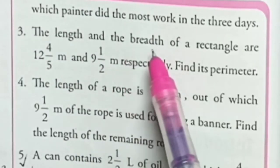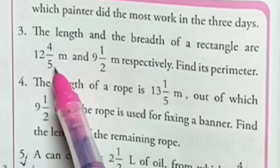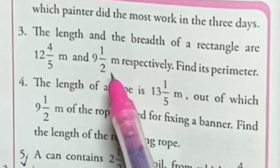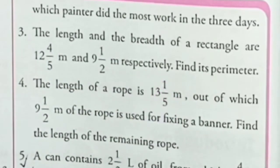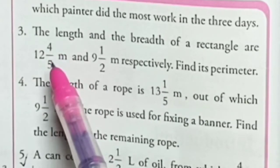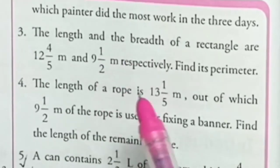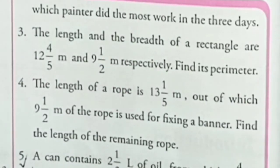Question three: The length and breadth of a rectangle are 12 and 4/5 meter and 9 and 1/2 meter respectively. Find its perimeter.